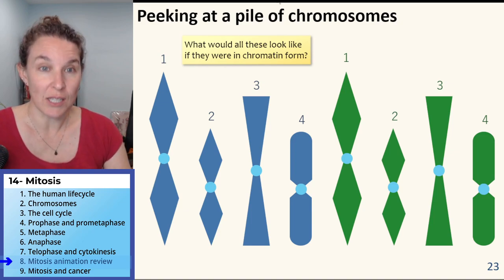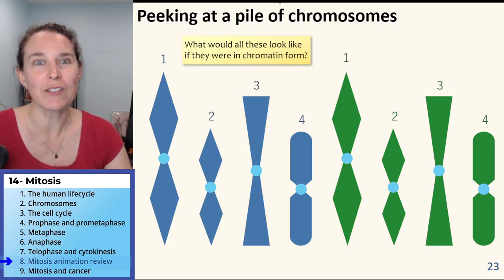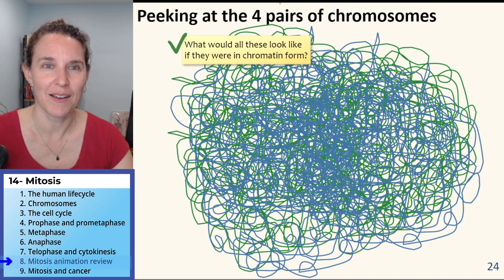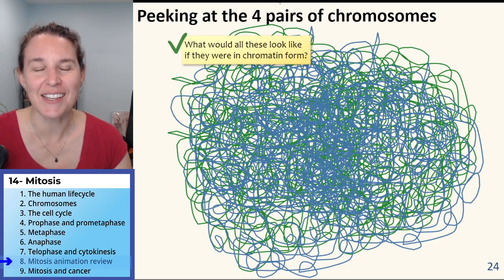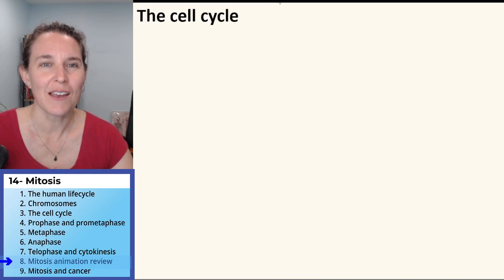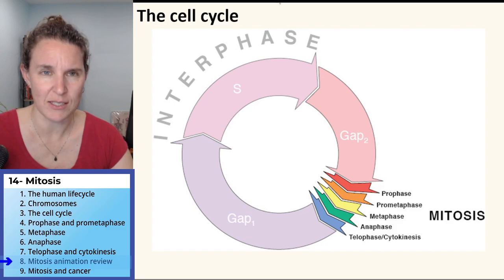What would these look like if it was in chromatin form? Loose chromatin form. Imagine. Are you ready? Loose chromatin form. Is that what you imagined? I think that actually is the eight tangles. Cell cycle, we're good, right? You remember the cell cycle.